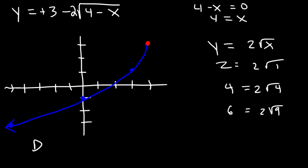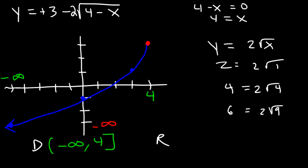The domain: the lowest x value is negative infinity and the highest is 4, so the domain is from negative infinity to 4. The range: the lowest y value is negative infinity and the highest is 3, so the range is from negative infinity to 3.